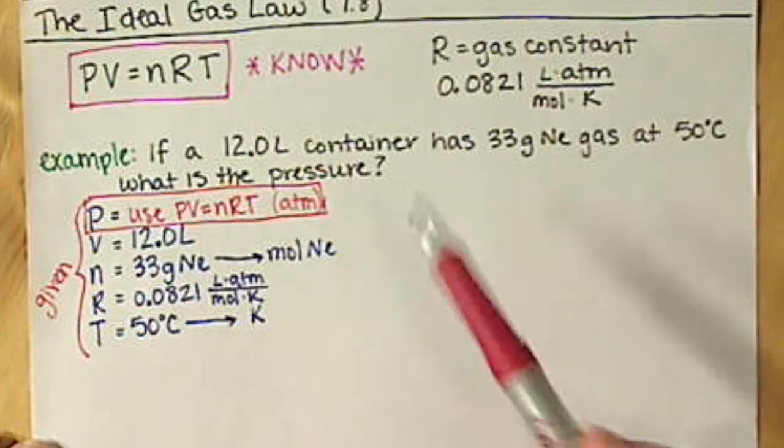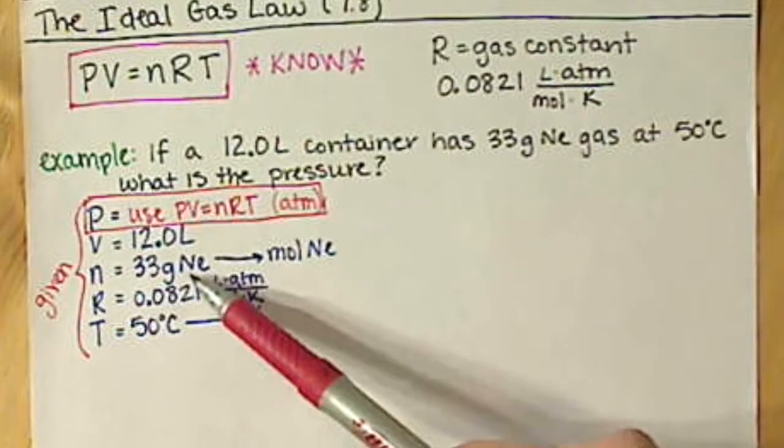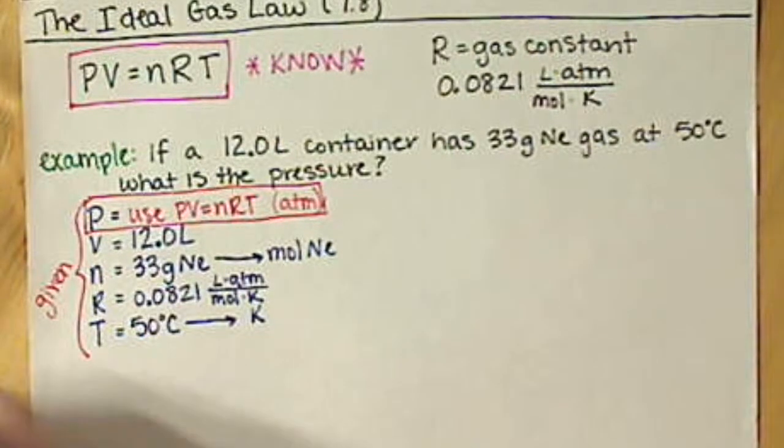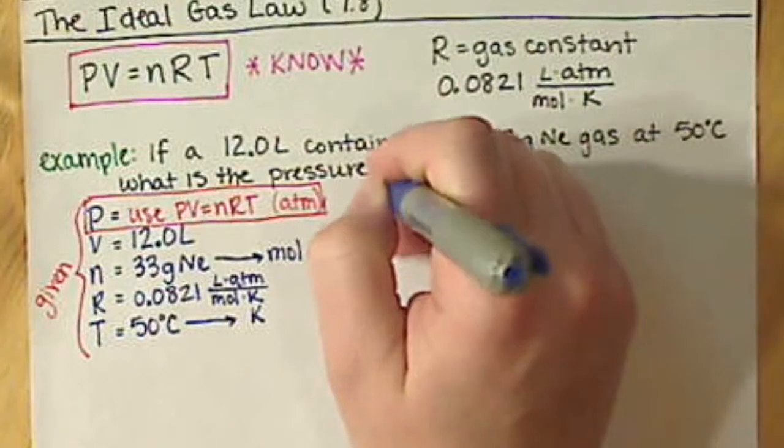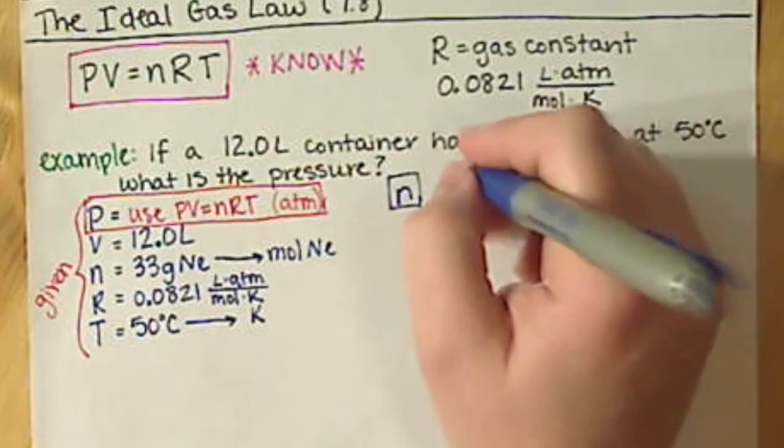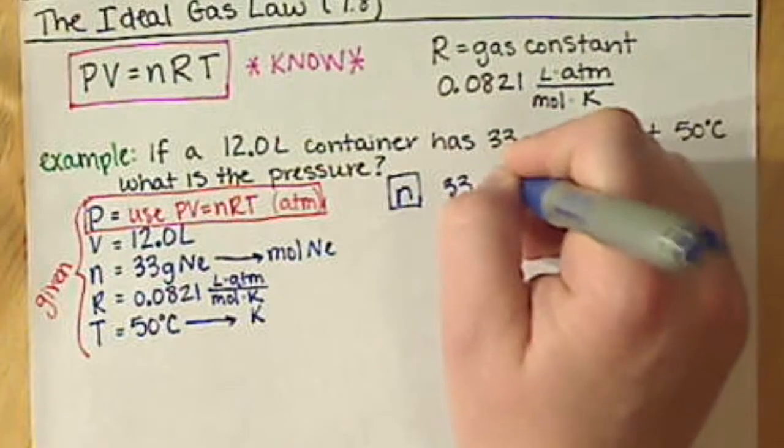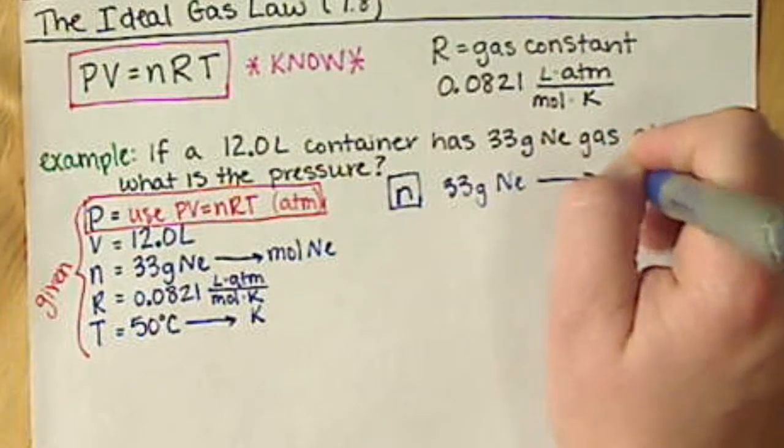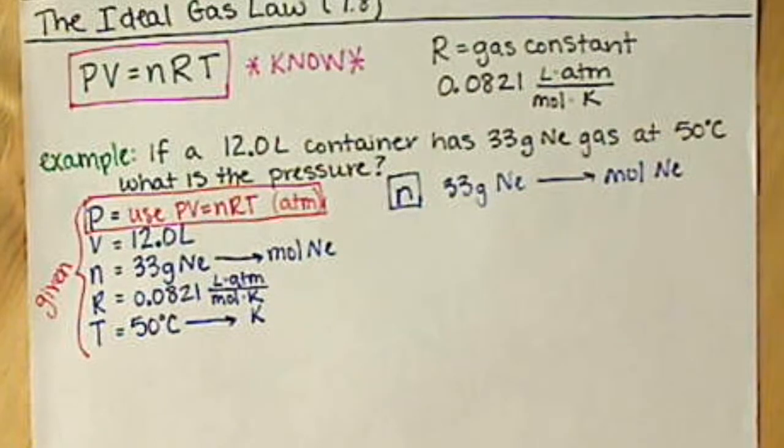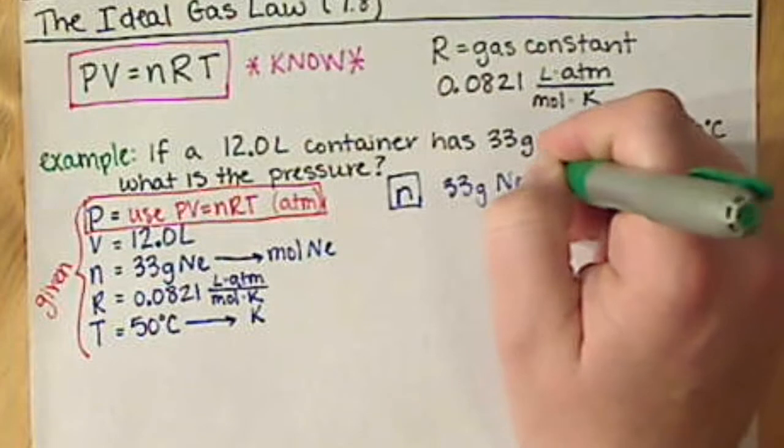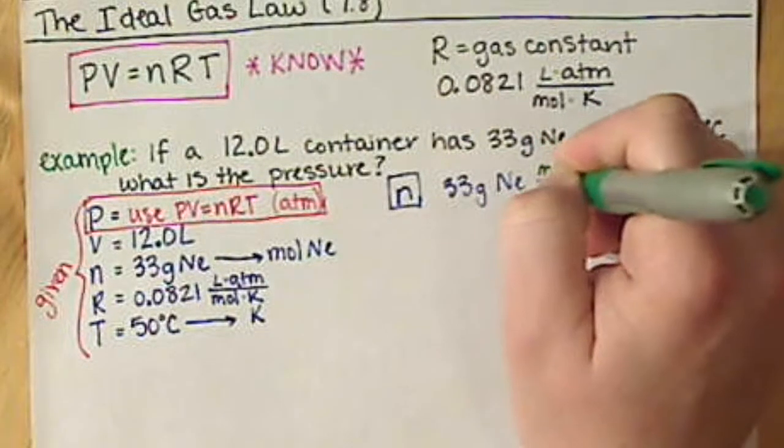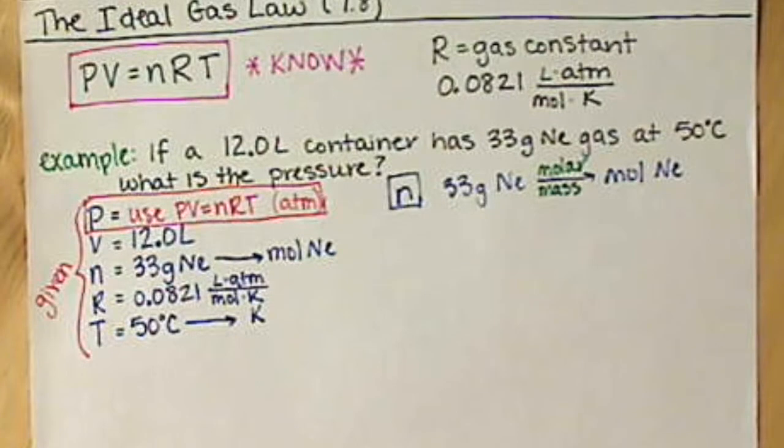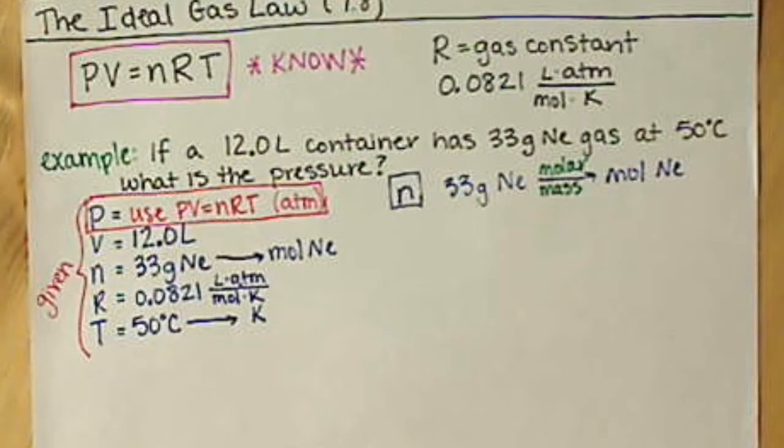We have two conversions to do here. We have our N, our amount. So we need to convert our N. We need to go from 33 grams of neon to moles of neon. How do we do that conversion? How do we get from grams to moles? We use our molar mass. And where do we find that information? Find that on our periodic table.